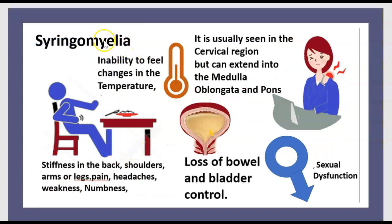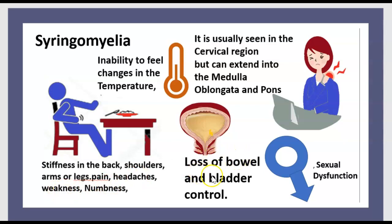Symptoms of syringomyelia include inability to feel changes in temperature. It is usually seen in the cervical region but can extend into the medulla oblongata. Other symptoms include stiffness in the back, shoulder, arm and leg, pain, weakness and numbness, and loss of bowel and bladder control, as well as sexual dysfunction.